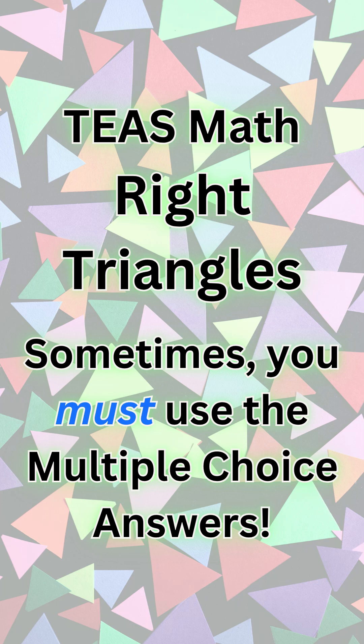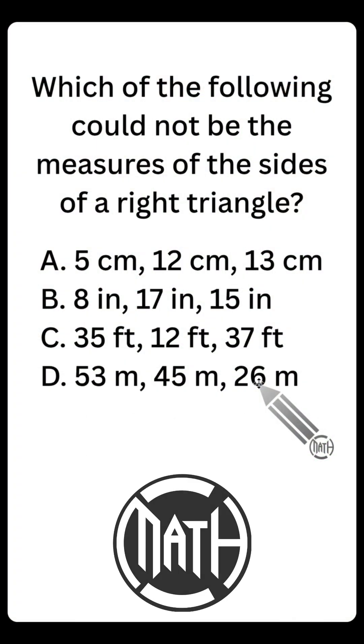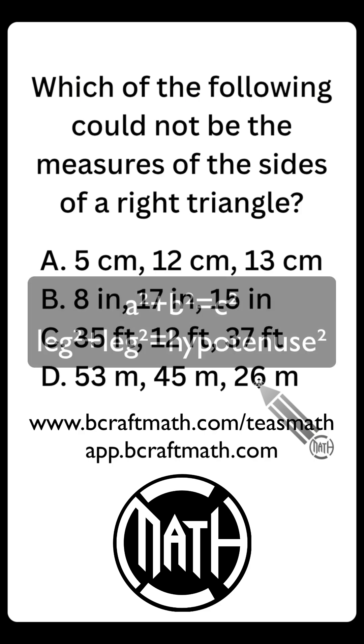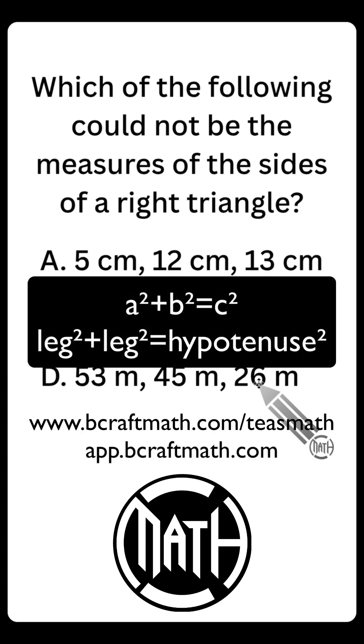If you saw the title, right triangles, sometimes you have no choice, you have to use the multiple choice answers. Now with most right triangles, you're probably going to use the Pythagorean Theorem, A squared plus B squared equals C squared.